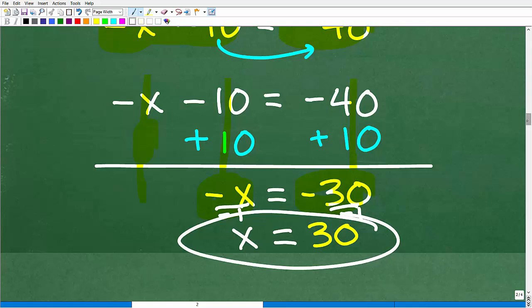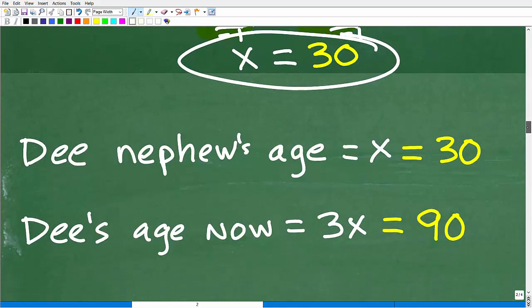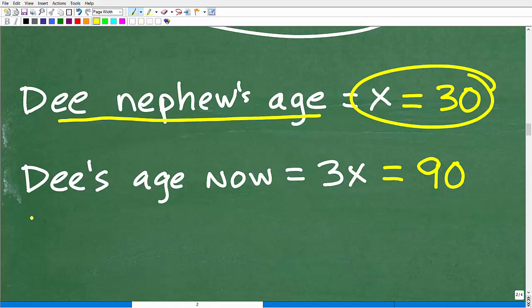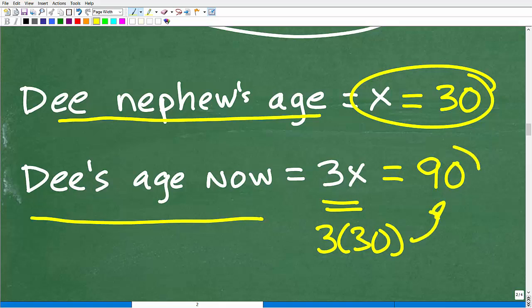Now what do we do with this answer? We're not done, right? We need to go back and review. Remember, in the beginning of this problem, we said that we're going to let X equal D's nephew's age, his current age right now. So D's nephew's current age is 30 and D's age is 3X. Remember, she is three times as old as her nephew. So that would be three times 30, which of course is 90 years old.